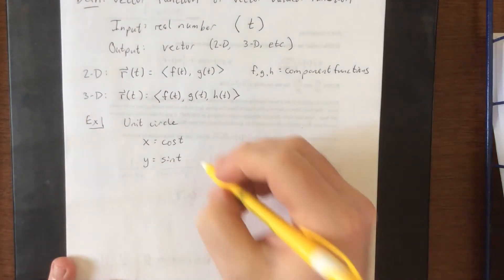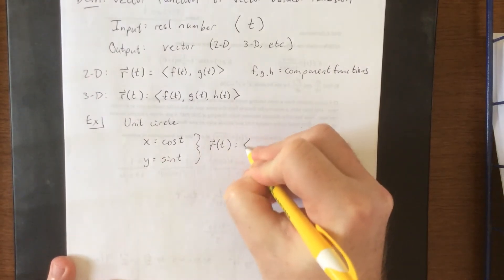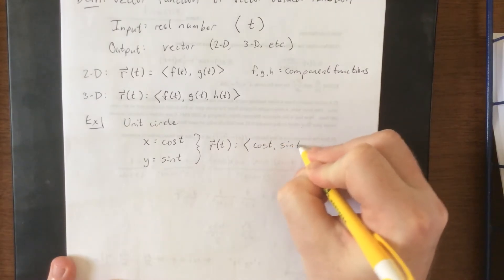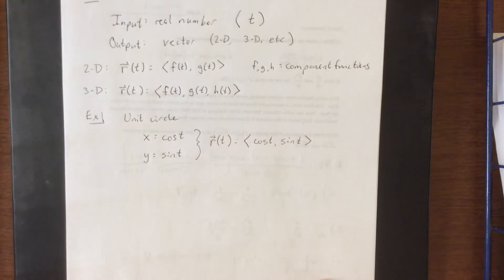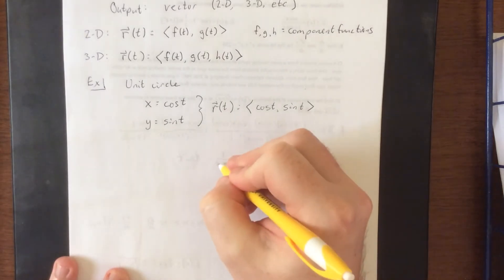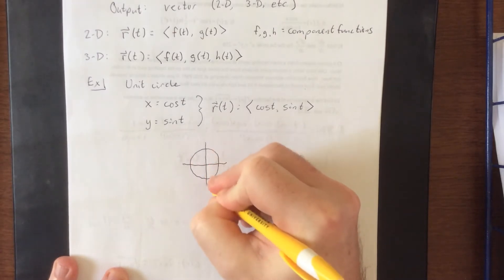So if I were to combine these into one single vector function, I could call it r of t, and say that the two component functions would be the cosine of t and the sine of t. Now if I wanted to consider what the graph of the unit circle looks like, it would look like the following.